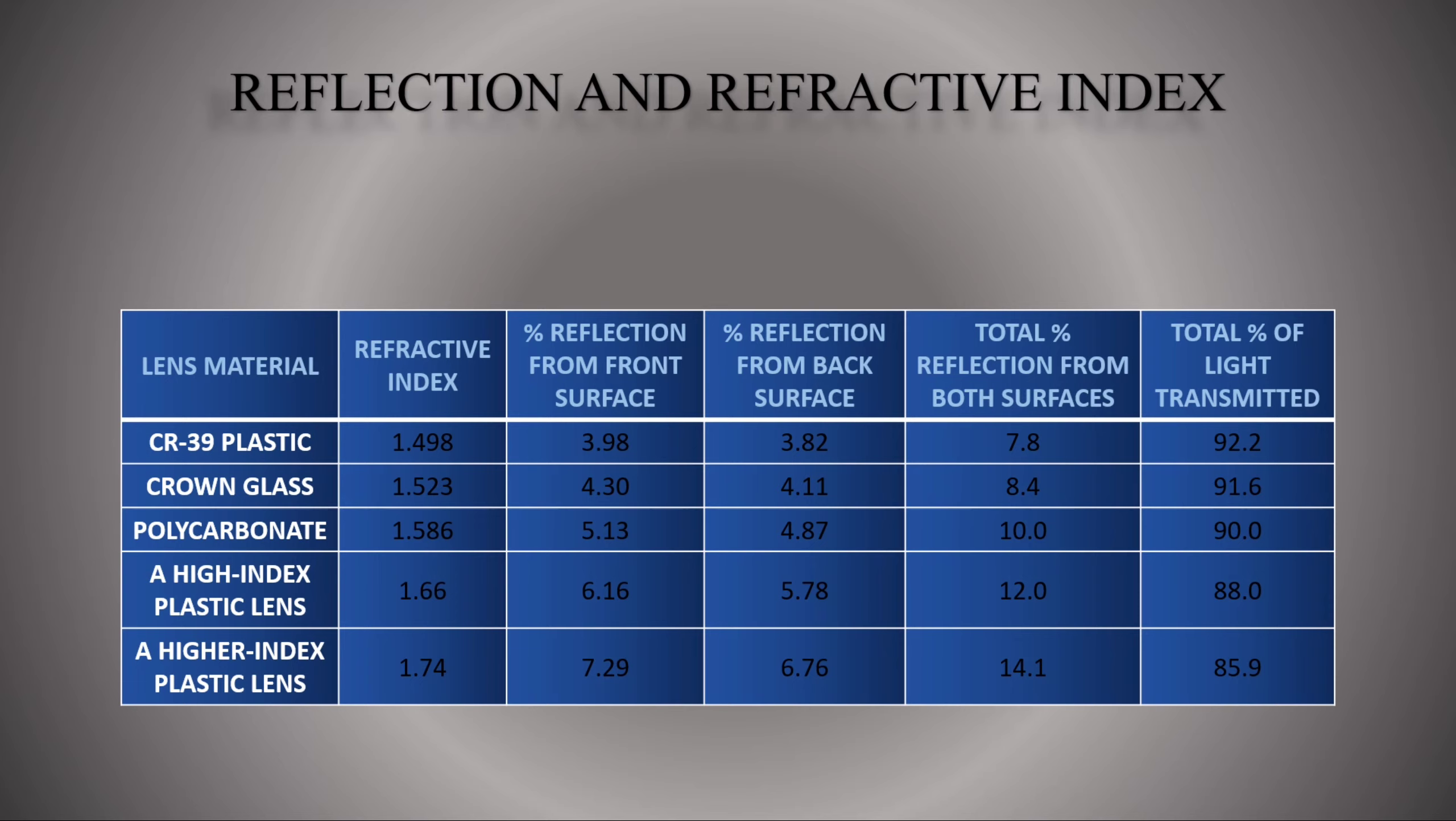Lens reflections vary according to index of refraction of the material. The higher the index of refraction, the more light is reflected. As can be seen in the table, a low index CR39 plastic lens reflects 7.8% of incoming light but a high index plastic lens can reflect 14.1% or almost twice as much.